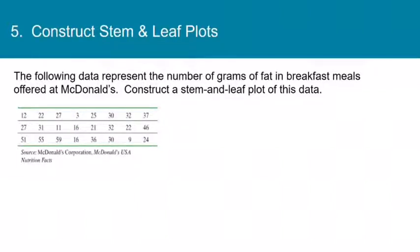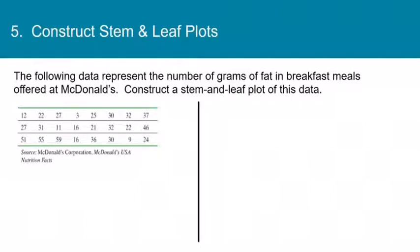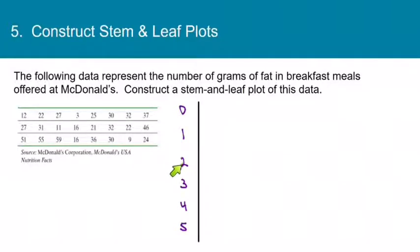Now let's see which stems we need. We know we need a stem of 0, and our largest value is 59, so we need a stem of 5 as well. You can't leave any stems out, so we need all stems between 0 and 5. I'm going to draw a vertical line with stems 0, 1, 2, 3, 4, 5 to the left, holding single-digit numbers, teens, 20s, 30s, 40s, and 50s respectively.